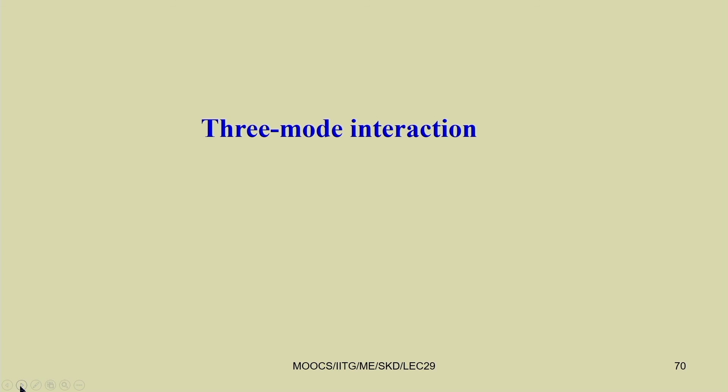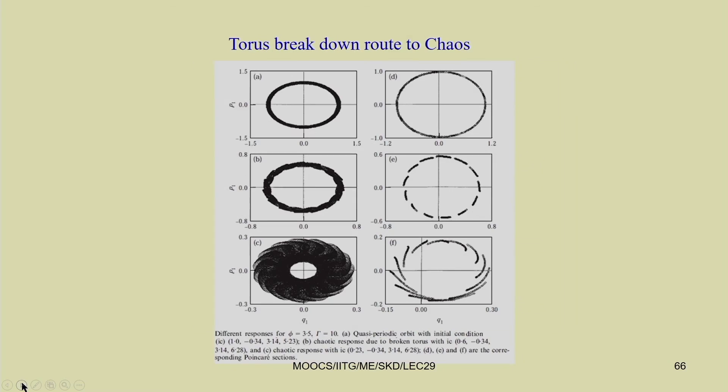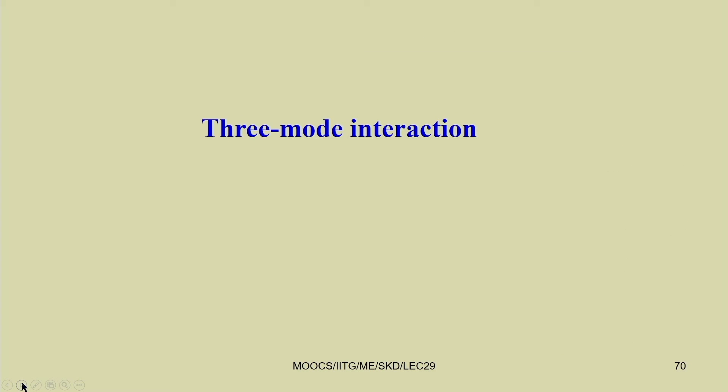In summary, we have seen many different periodic, quasi-periodic, and chaotic responses, and three different routes to chaos: period-doubling route to chaos, torus-breakdown route to chaos, and symmetry-restoring crisis. The intermittency route to chaos was also demonstrated, where the initially symmetric chaotic response restores symmetry through the crisis mechanism.